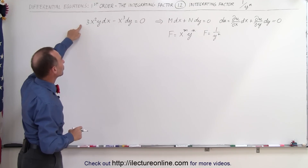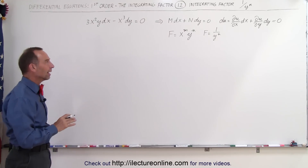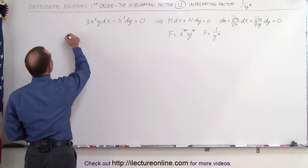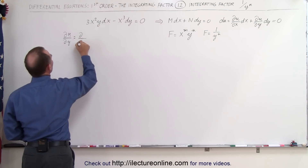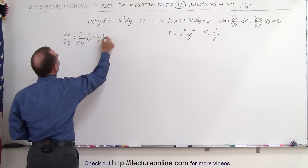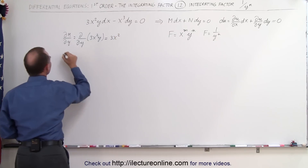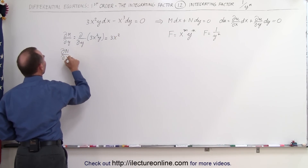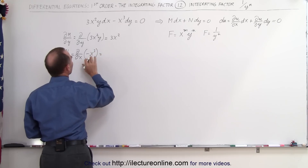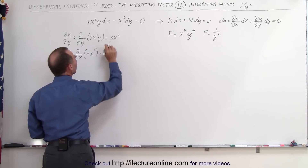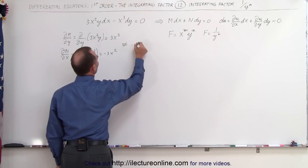We start out with the general equation 3x² y dx minus x³ dy equals 0, and let's quickly see if it's an exact equation or not. We take the partial with respect to y of M — which is 3x² y — and that gives 3x². Then the partial of N with respect to x of the quantity minus x³ gives minus 3x². Notice they're not the same — positive versus negative — therefore it is not exact.